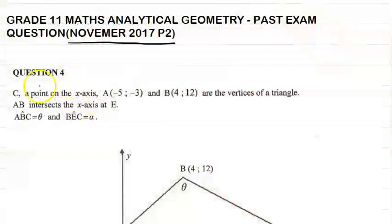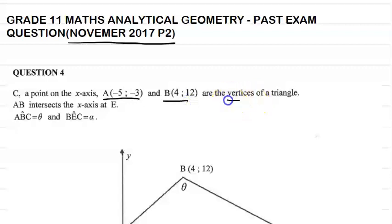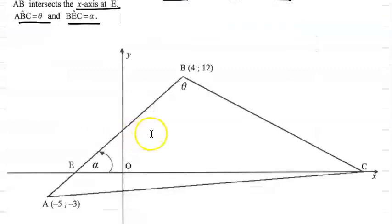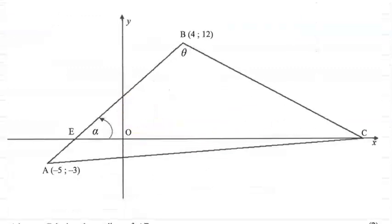The question reads as follows. C is a point on the x-axis. A is (-5, -3) and B is (4, 12) — these are the vertices of a triangle. AB intersects the x-axis at E. Angle ABC is equal to theta, and angle BEC is equal to alpha. All of the information is on the diagram.